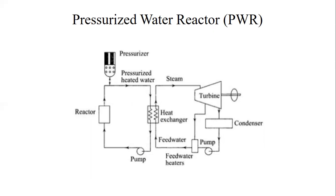In PWR, the coolant pressure must be greater than the saturation pressure at 300 degrees Celsius, or 85.93 bars, to prevent boiling. The pressure is maintained at about 155 bars so as to prevent bulk boiling. The PWR power plant is composed of two loops in series. In the schematic diagram of the pressurized water reactor, on the left hand side you can see the primary coolant loop, and on the right hand side the water-steam or working fluid loop. The coolant picks up heat in the reactor and transfers it to the working fluid in the steam generator. The steam is then used in a Rankine cycle to produce electricity.